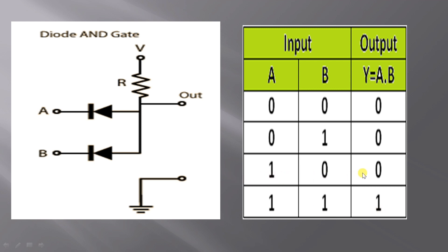Now I shall explain the case where A is given 5V, so A is 1, and B is given 0V, so B is 0. The diode connected to A is in reverse bias. Since B is 0V, the diode connected to B is in forward bias and conducts current. So current passes through this diode, and there will be almost no voltage at the output. Output voltage is 0.